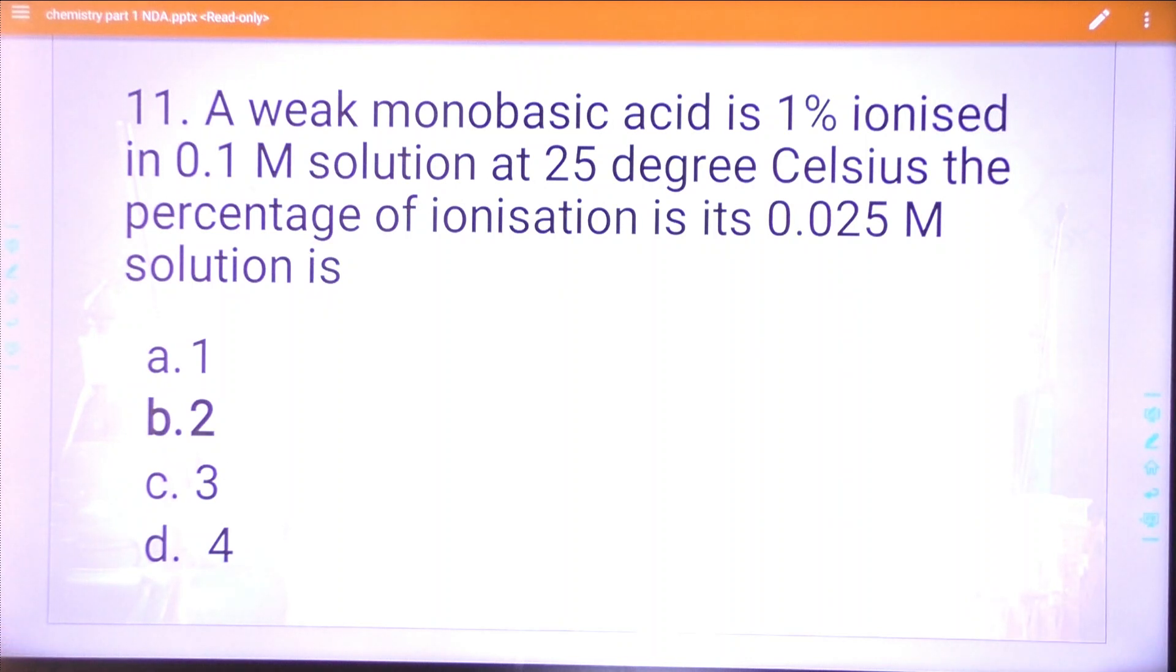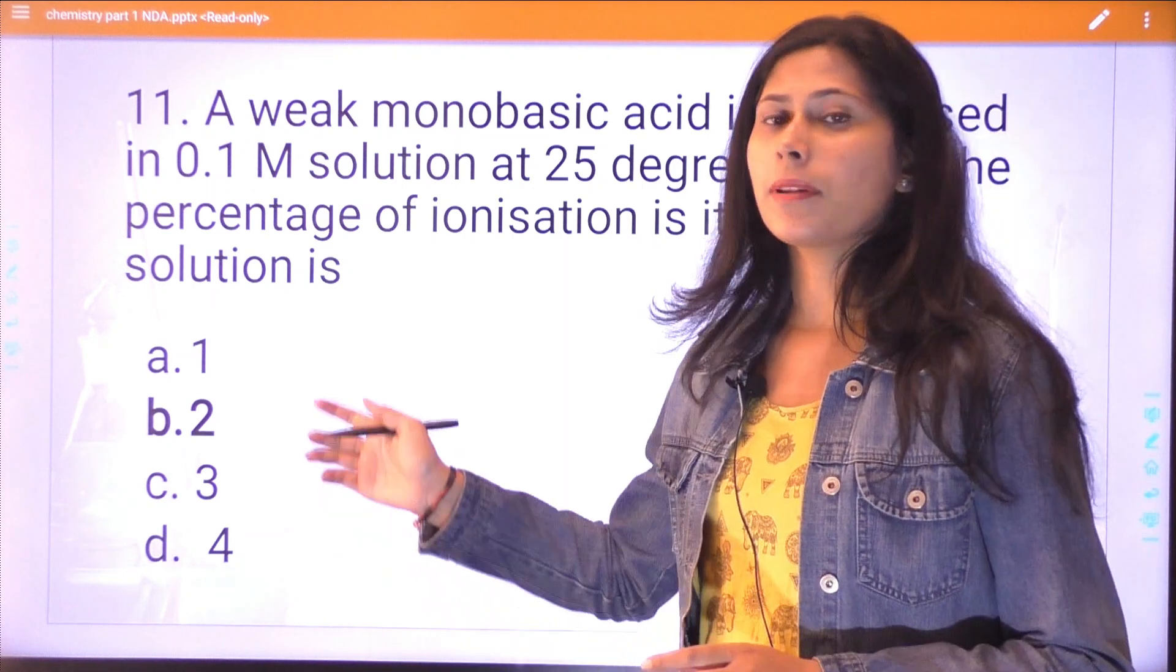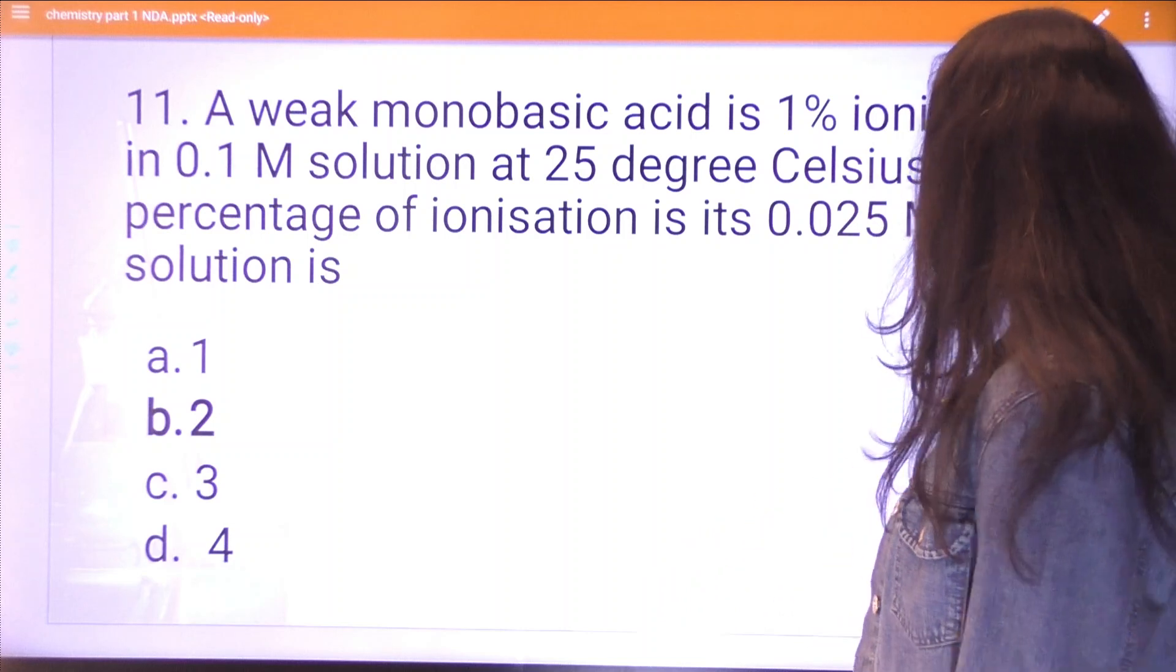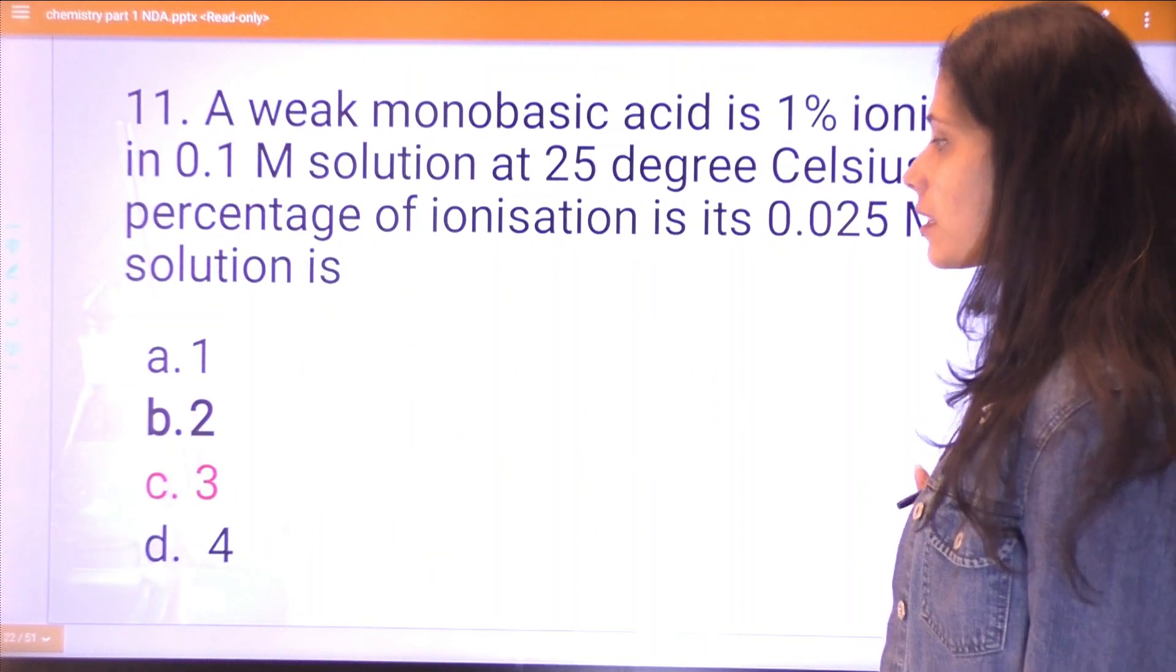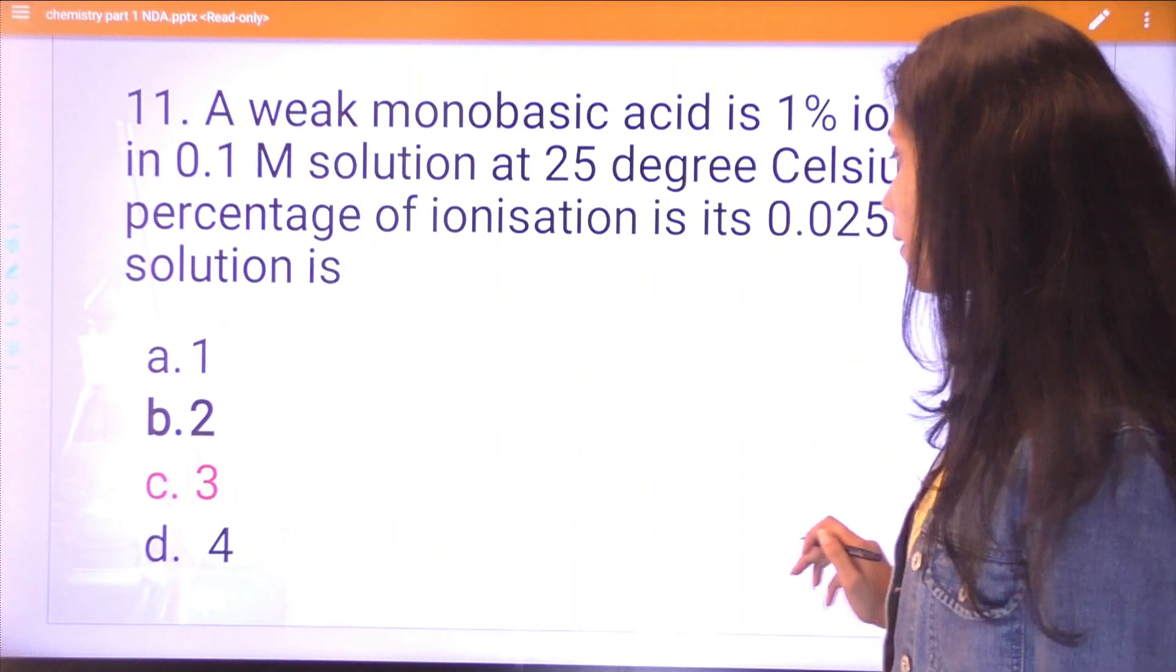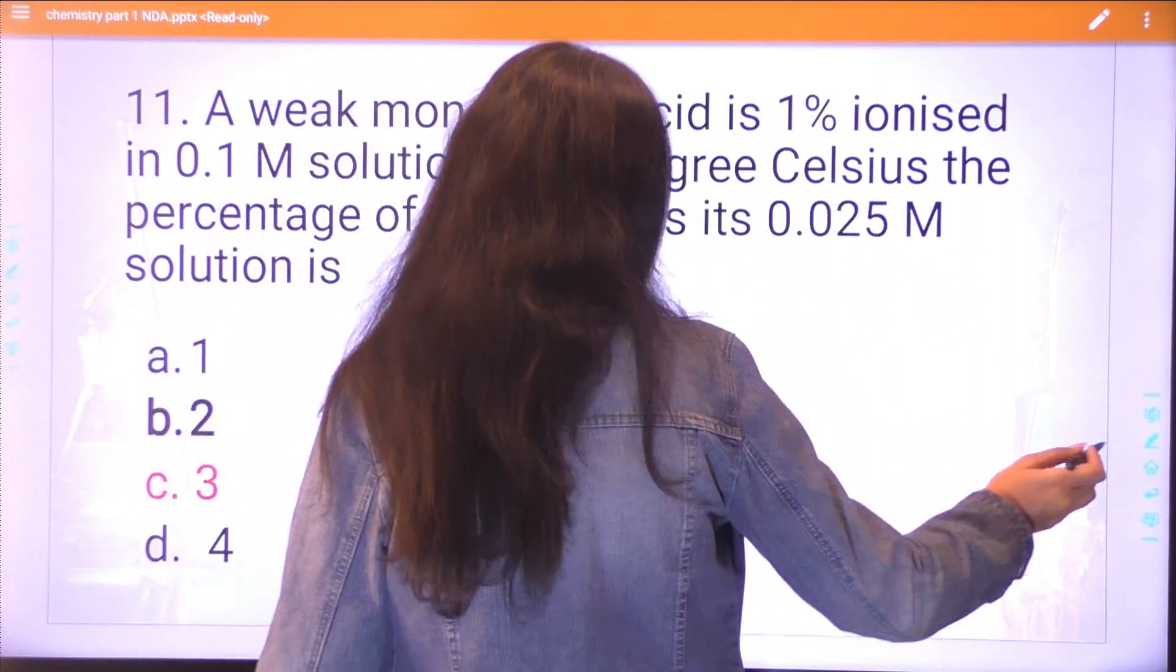Question eleven: a weak monobasic acid is one percent ionized in 0.1 M solution at 25 degrees Celsius. The percentage of ionization in 0.025 M solution is 2.